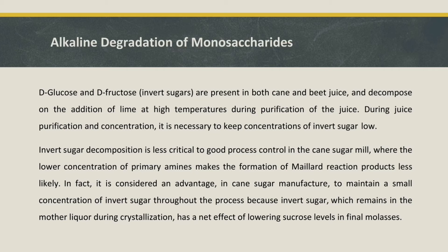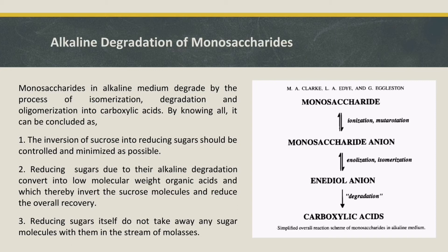Invert sugar decomposition is less critical to good process control in the cane sugar mill, where the lower concentration of primary amines makes the formation of Maillard reaction products less likely. In fact, it is considered an advantage in cane sugar manufacture to maintain a small concentration of invert sugar throughout the process, because invert sugar which remains in the mother liquor during crystallization has a net effect of lowering sucrose levels in final molasses.